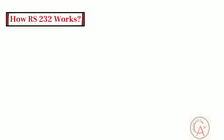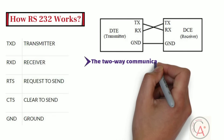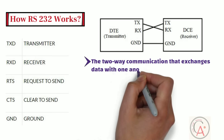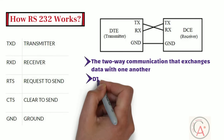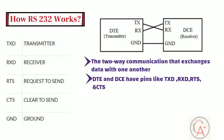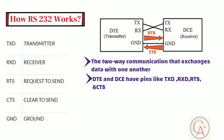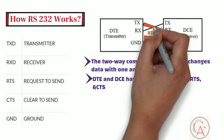Now let's learn how RS-232 works. RS-232 works on two-way communication that exchanges data with one another. The data transmission equipment (DTE) and data communication equipment (DCE) have pins like TXD, RXD, RTS, and CTS. From the DTE source, the RTS generates a request-to-send signal. Then from the DCE side, CTS clears the path for receiving data. After clearing the path, it gives a signal to the RTS of the DTE source to send the signal. Then the bits are transmitted from the data transmission equipment to the data communication equipment.